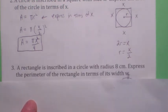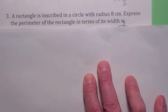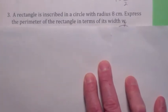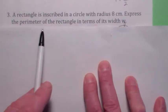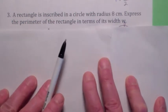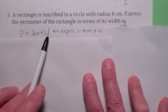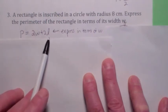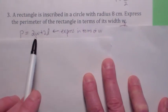Let's do another one. Here we have one where a rectangle is inscribed in a circle. Again, that just means it's inside of the circle. And the circle has radius 8 centimeters. Express the perimeter of the rectangle in terms of w. Okay, well the perimeter of a rectangle is 2w plus 2l. When it says express in terms of w, that means we have to get rid of l, right? So what you need to do is you need to find another relationship between l and w.